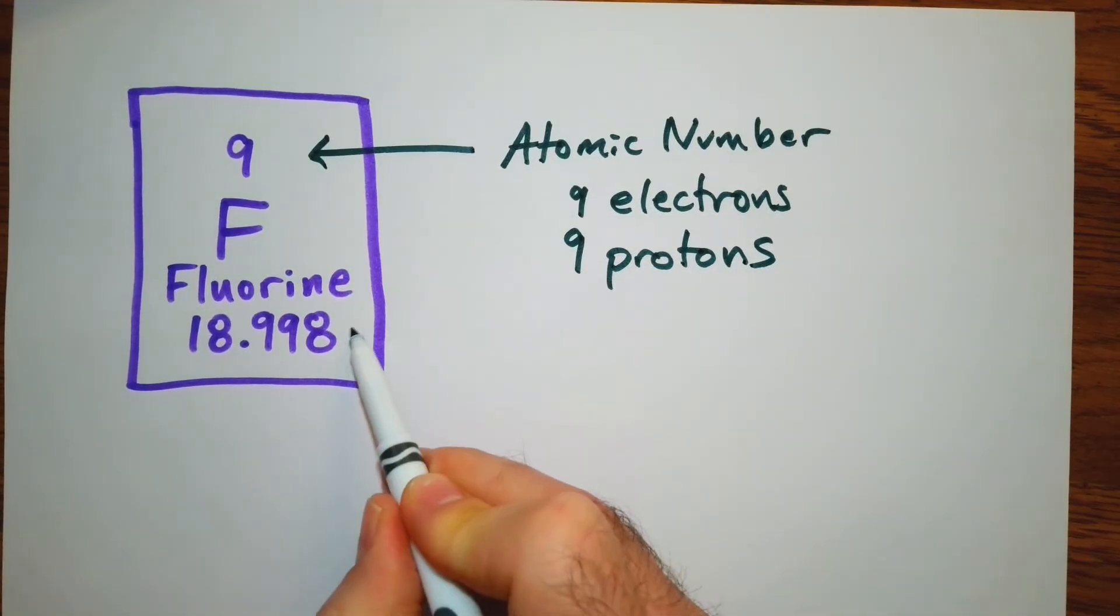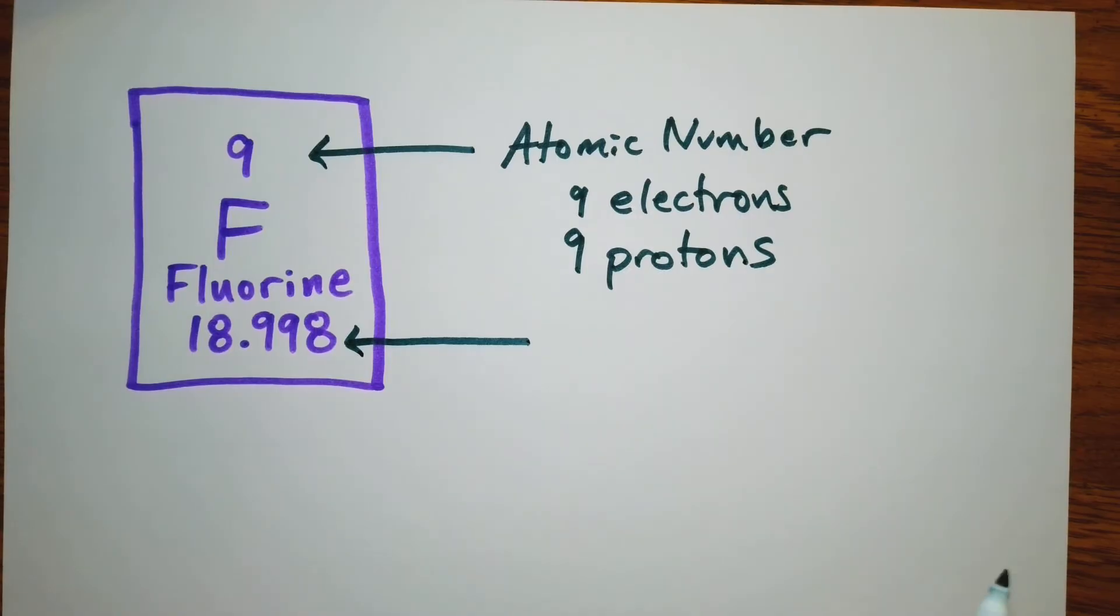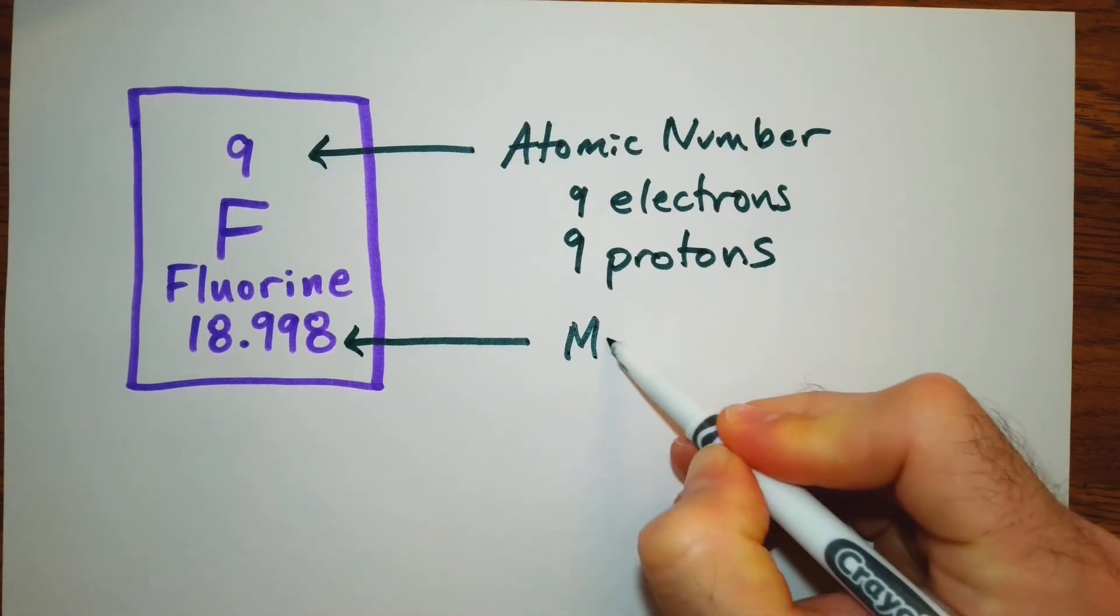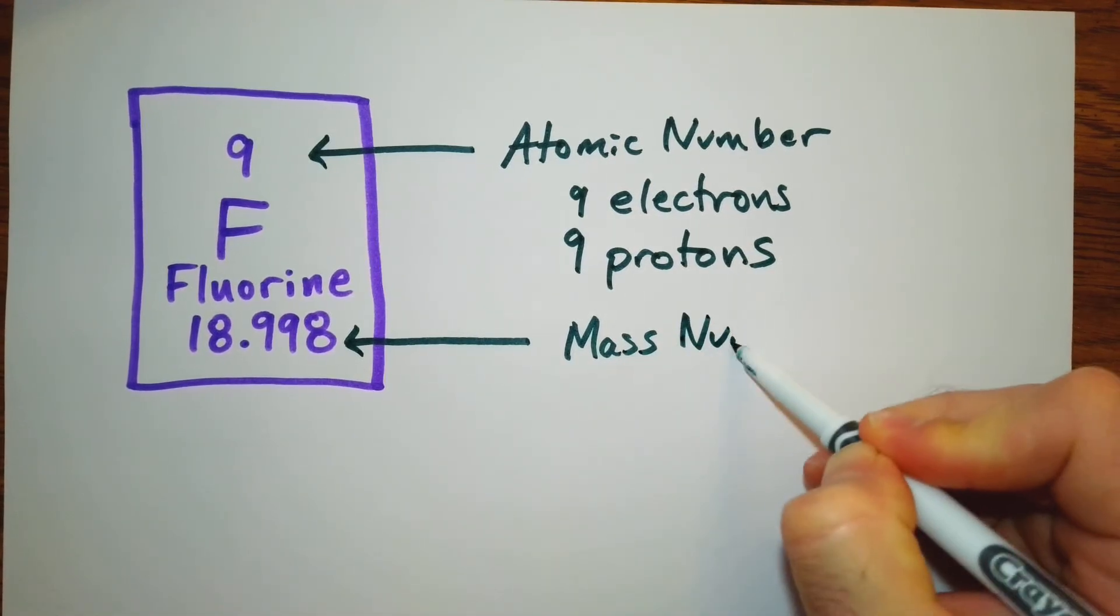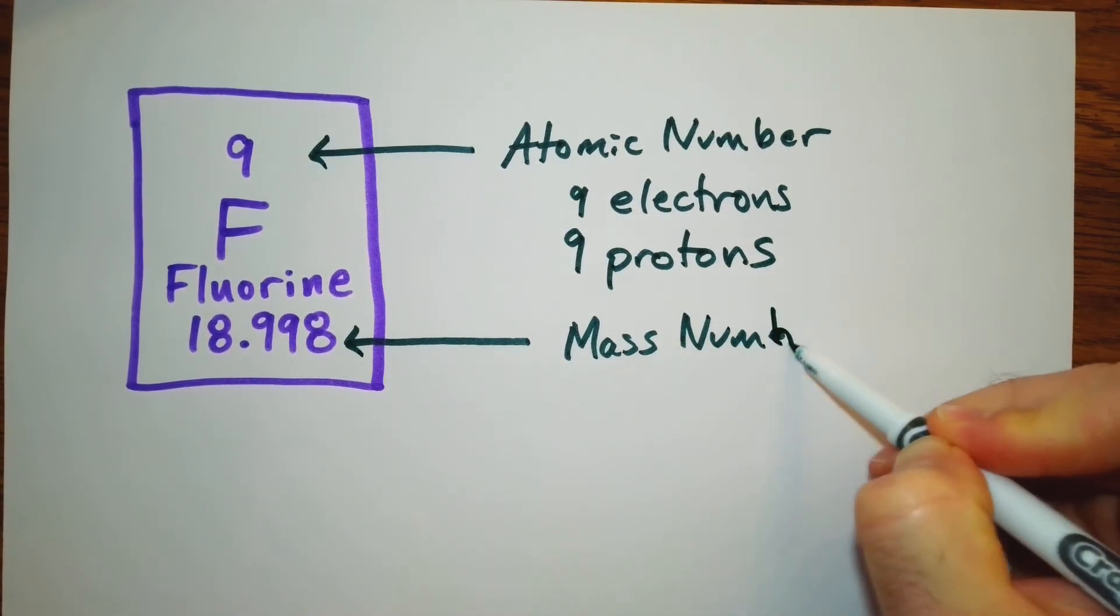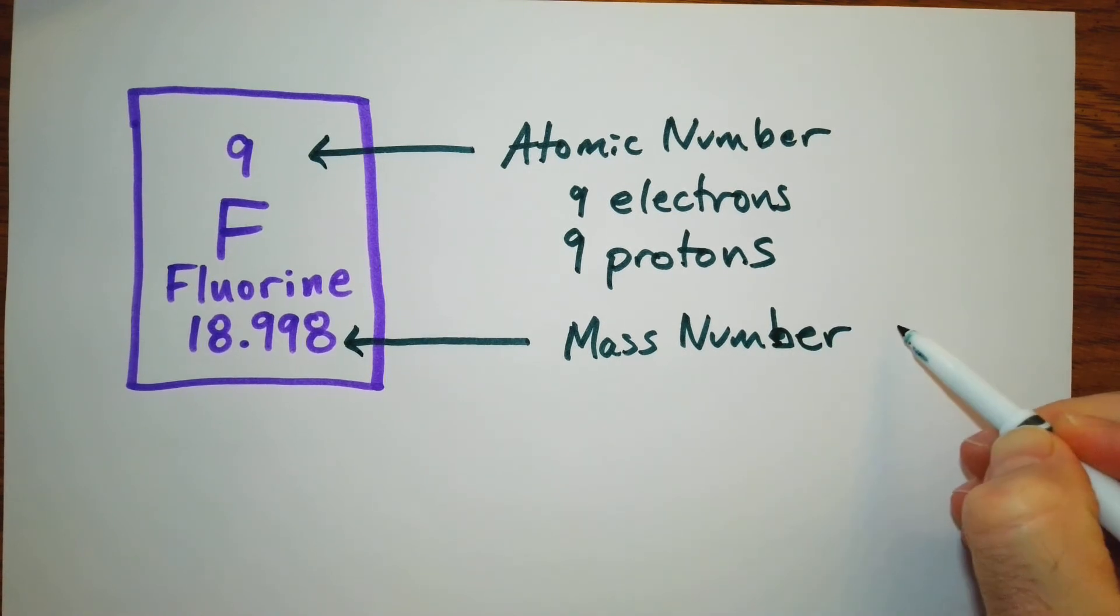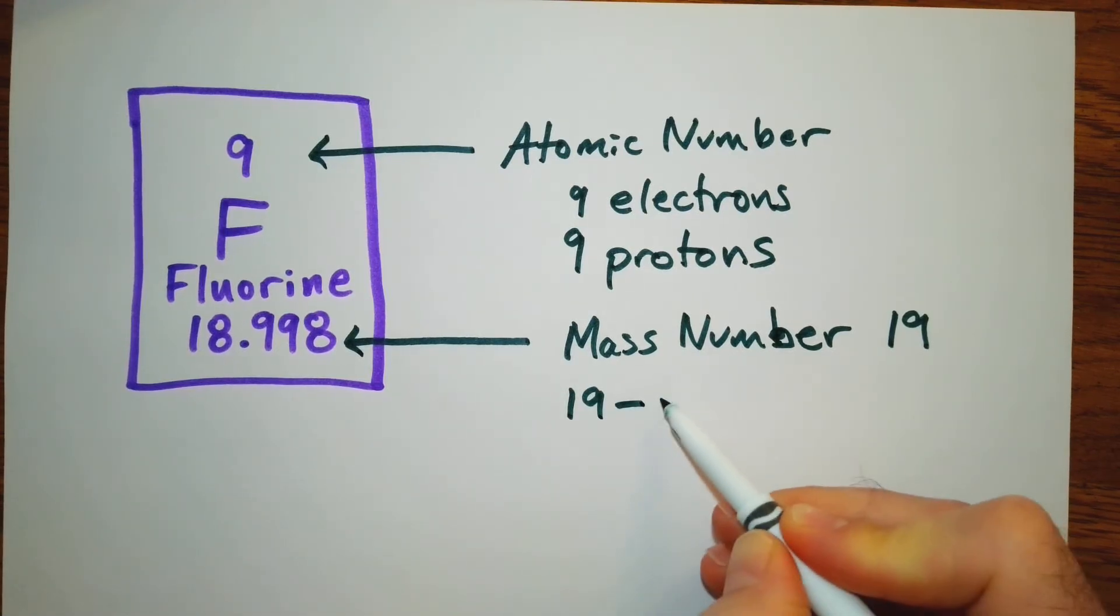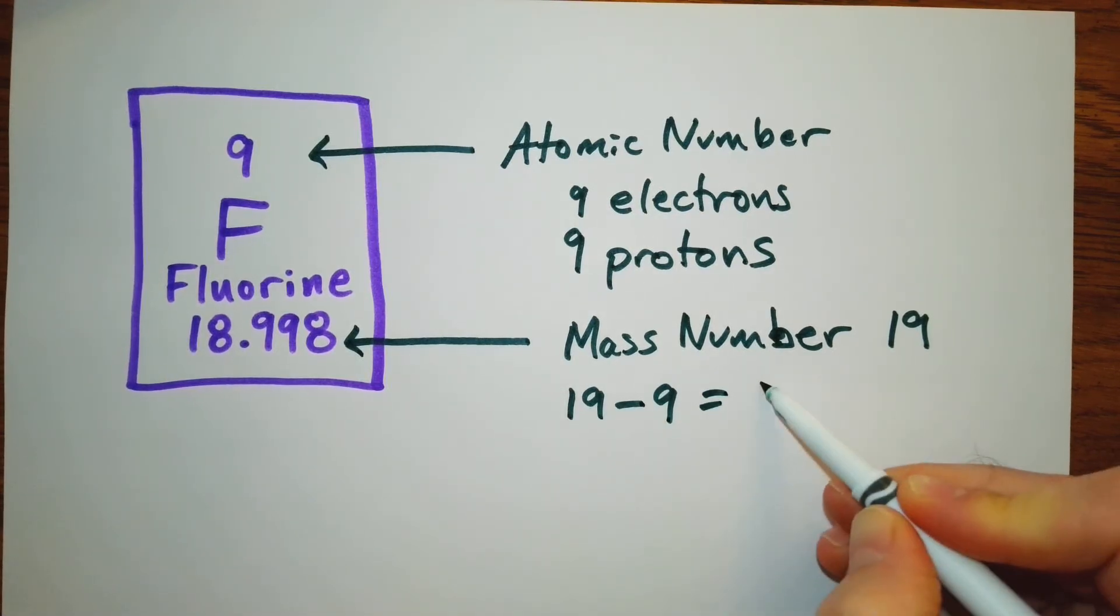And then with our average atomic mass, or mass number, if you want to call it that, we're going to round that up to 19. So we're going to have 19 minus 9. That's going to give us 10 neutrons.